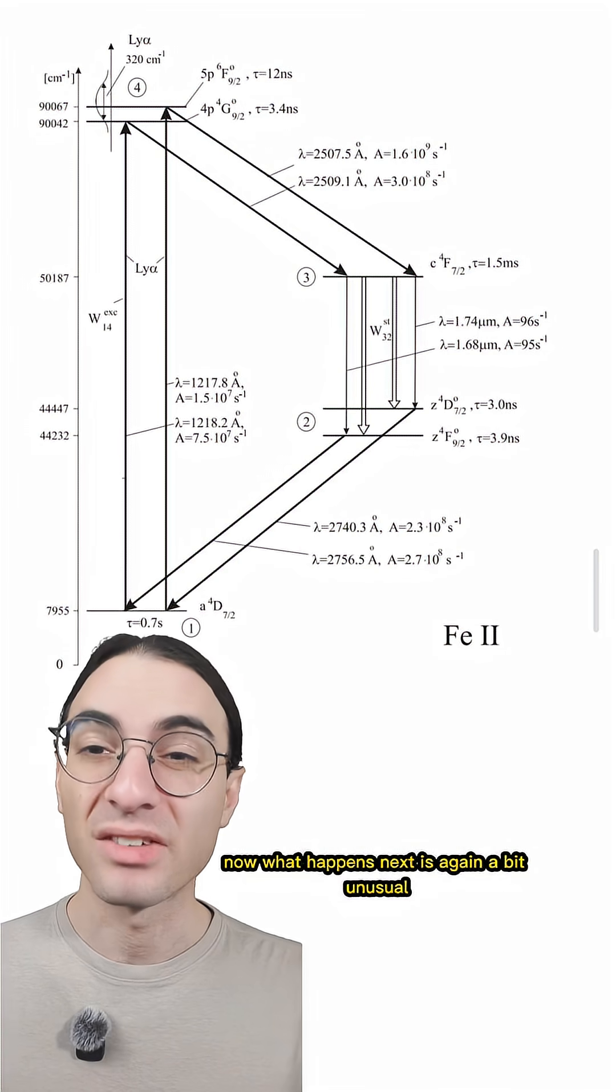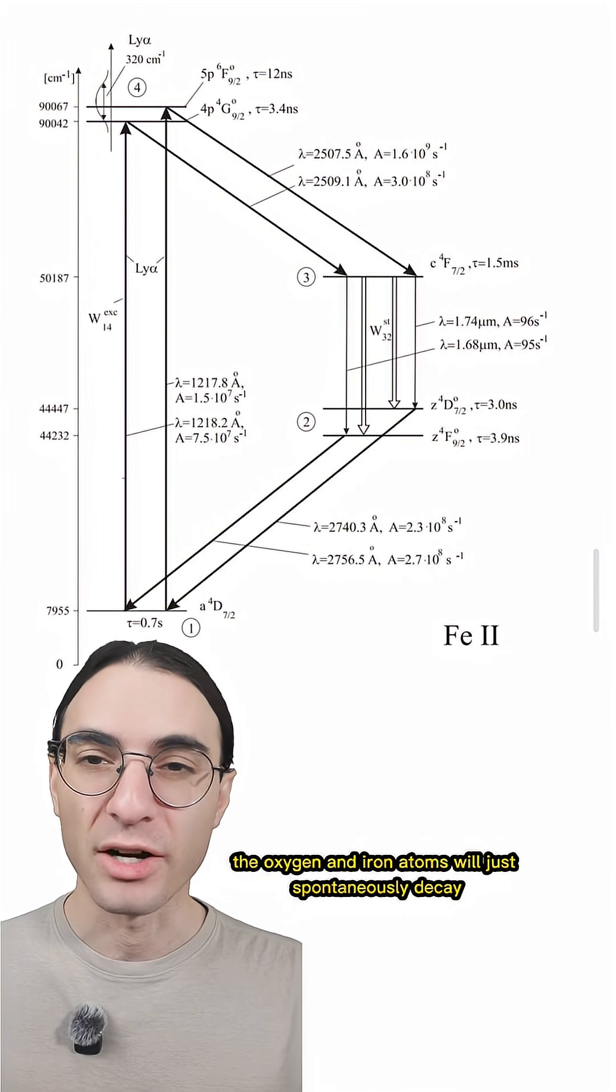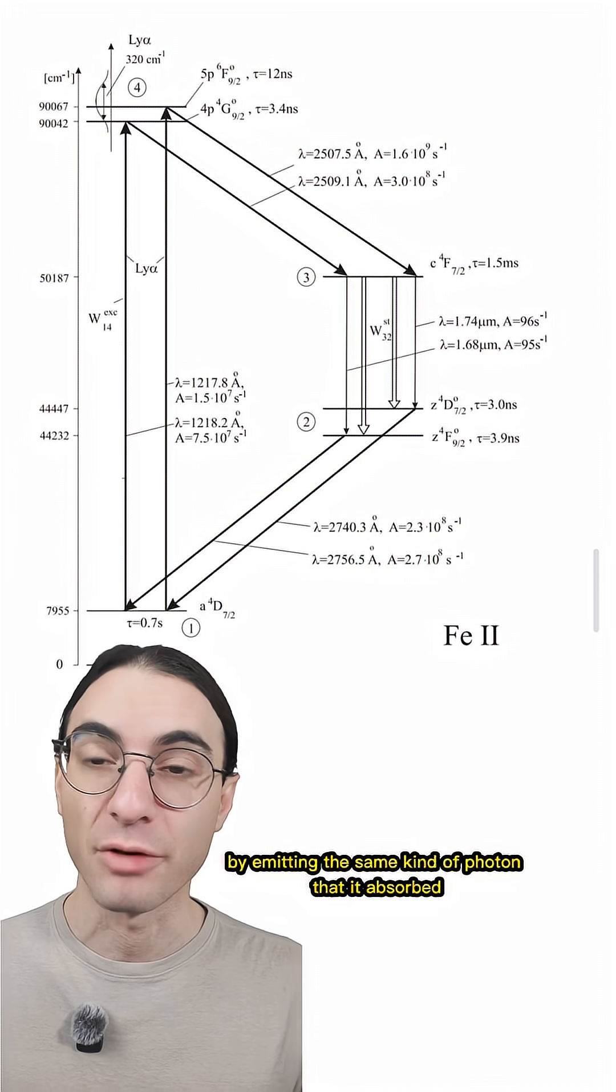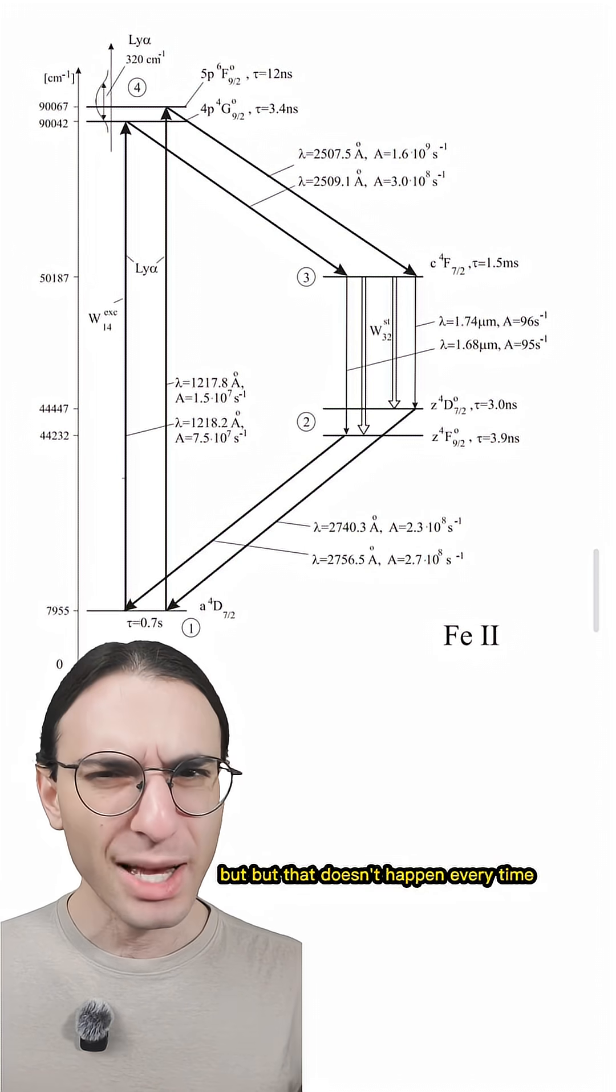Now, what happens next is again a bit unusual. Most of the time, the oxygen and iron atoms will just spontaneously decay back to a lower energy level by emitting the same kind of photon that it absorbed. But that doesn't happen every time.